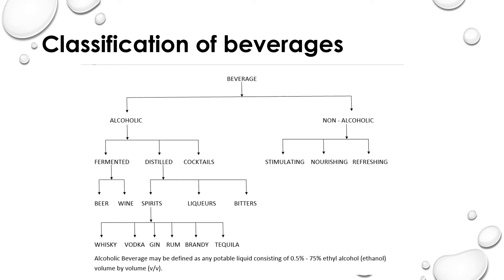Coming to alcoholic classification: first we have fermented beverages, which involve taking sugar components and fermenting them by bacteria or microbes, with alcohol produced as the byproduct. In this category we can place beer and wine — beer is produced from grains, wine is produced from fruits. From these fermented products we can also distillate, refining the alcohol percentage to get distilled alcoholic beverages.